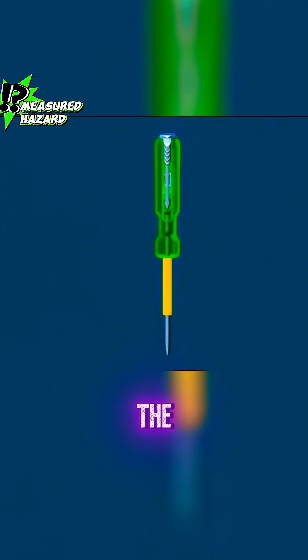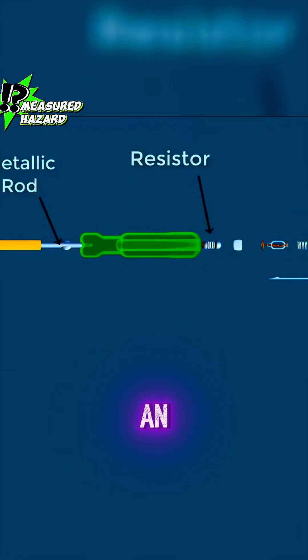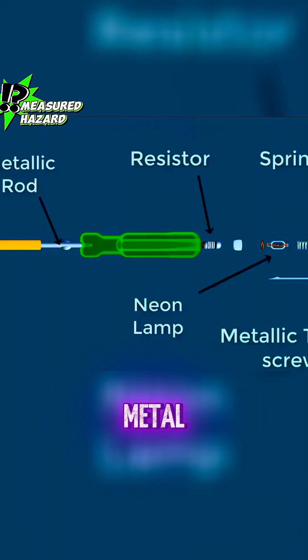Let's take a look at the internal structure of the test pen. It mainly consists of a metal tip, a resistor, an indicator light, a spring, a metal end cap, and an insulated casing.